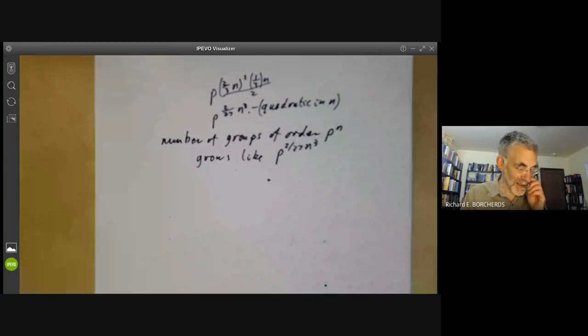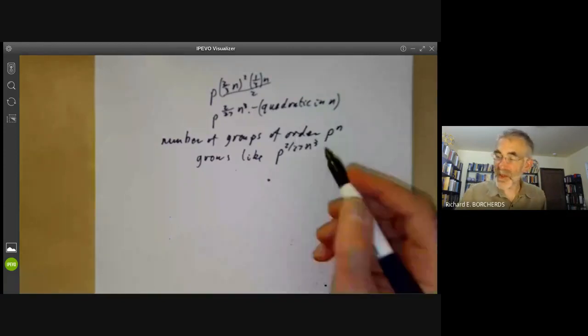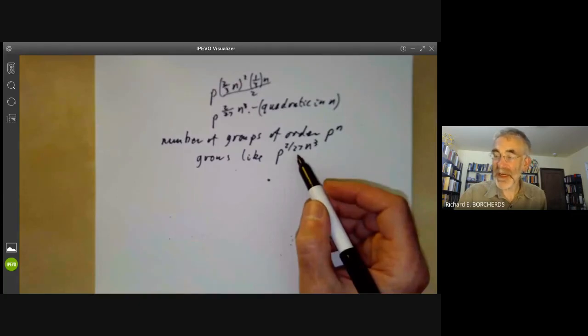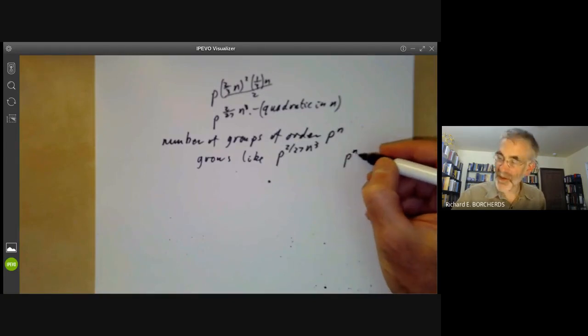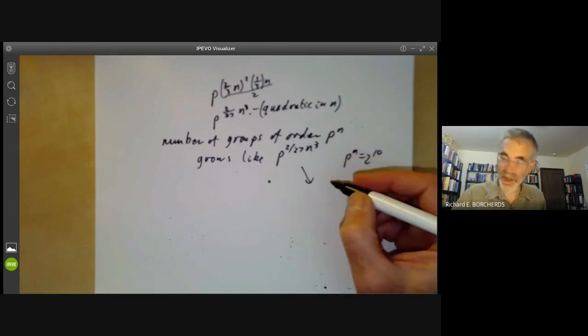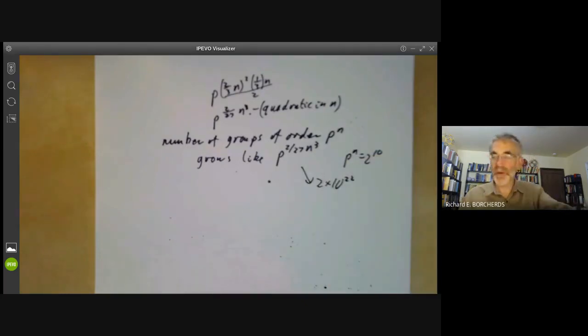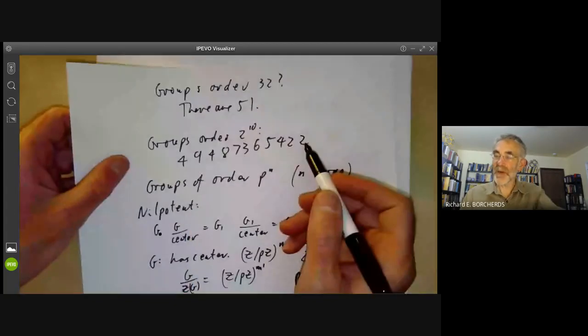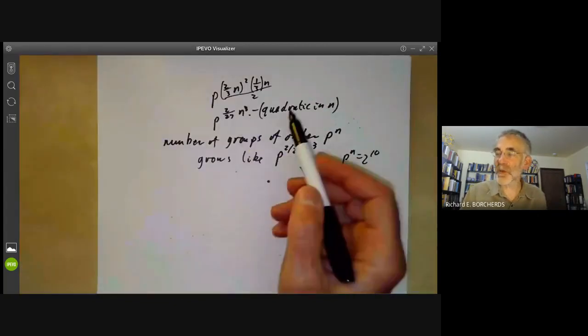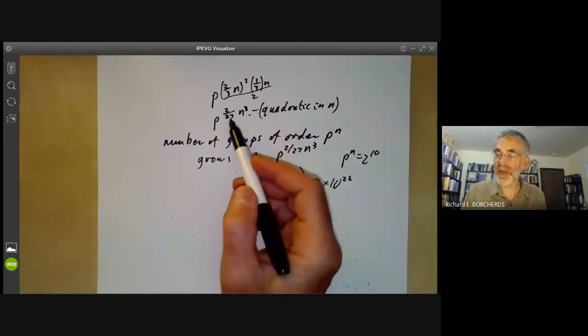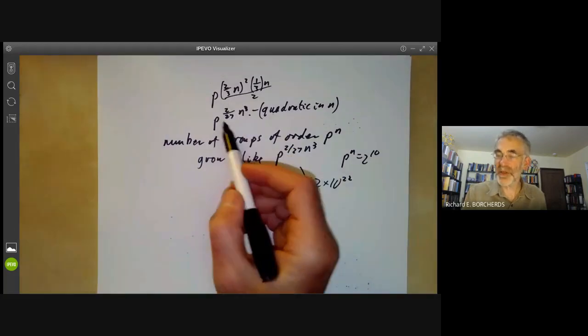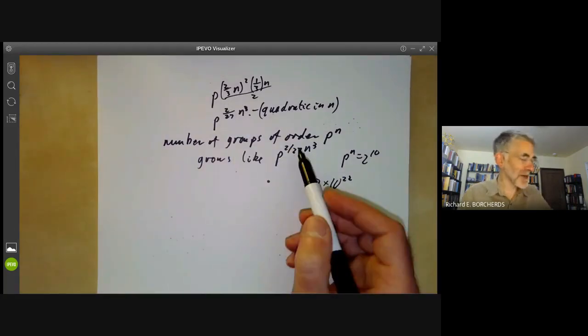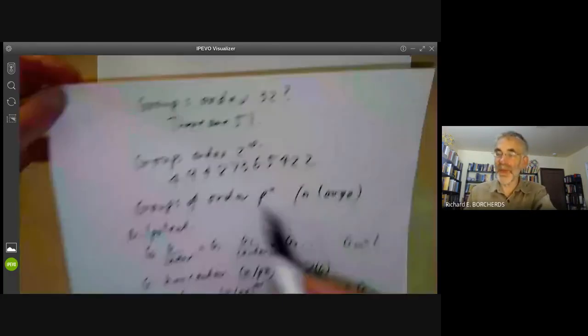In fact, we see the number of groups of order 2 to the 10 that we had doesn't really even give us an idea just how vast this number is. Because if we take p to the n equals 2 to the 10, we find this number here is about 2 times 10 to the 22, which is much bigger than the number of groups that actually are of order 2 to the 10. So it's saying that even for groups of order 2 to the 10, this quadratic term here is still keeping this cubic term under control. But as n gets larger and larger, this cubic term starts to dominate and the number of groups grows even more rapidly than this number here suggests.